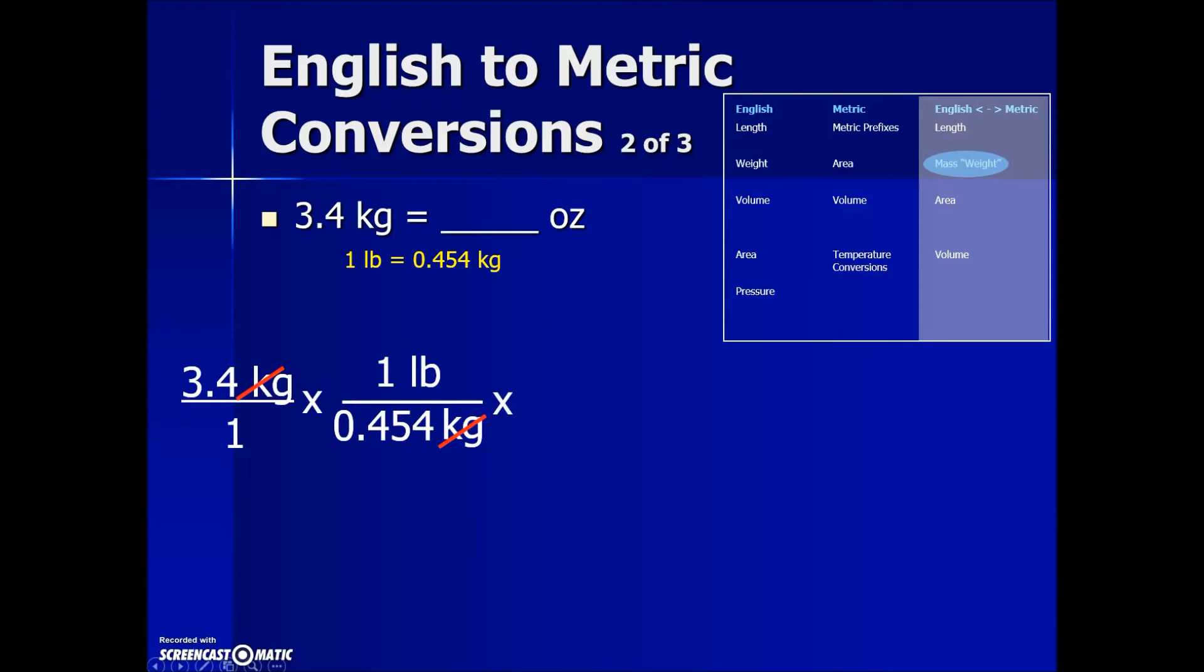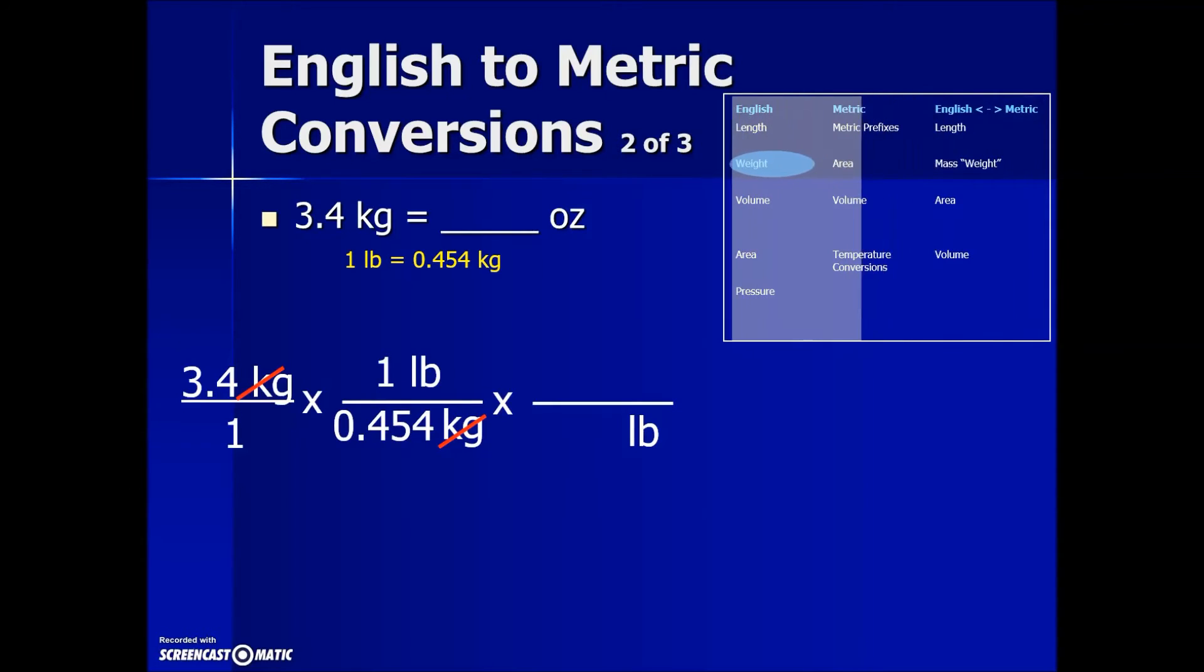So now we switch over to the English side of the table. When we put our conversion factor together, we want to be sure that we have pounds in the denominator so it cancels out our current pound measurement. When we look under weight on the English side, we find one pound is equal to 16 ounces. Here's our second conversion factor fraction. Pounds cancel out, and now we're ready to do the simplification.